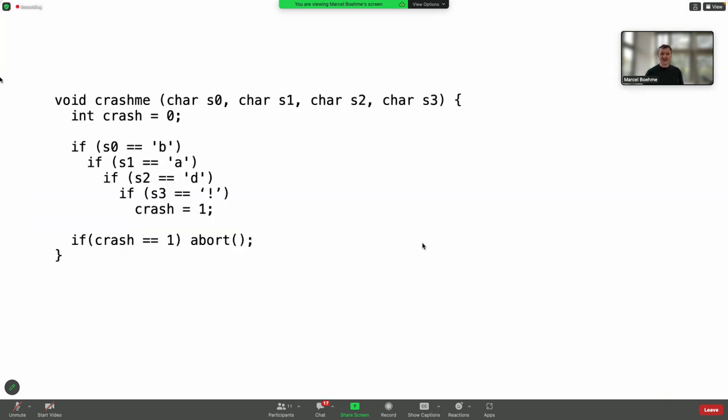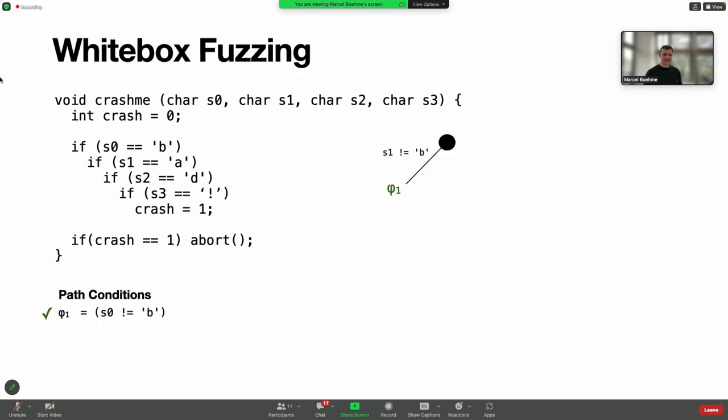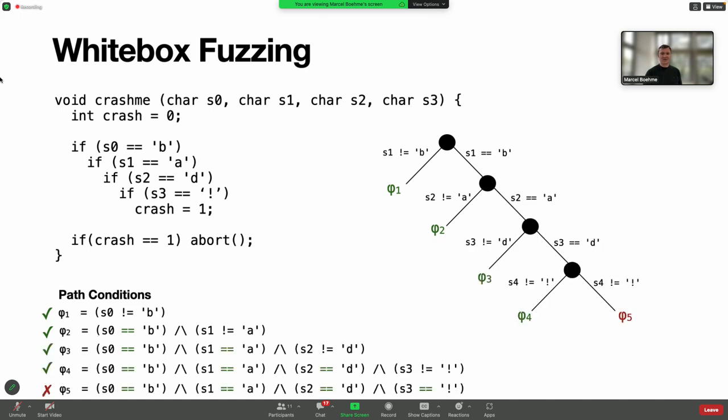So what is fuzzing? Fuzzing is a testing process. Here we are given a program that takes four characters. One approach is white box fuzzing - white box because the analysis can see the internals of that program. The program has four branches and we try to explore every path by capturing the conditions of each branch. One input exercises the path where the first character is not a B. Another input exercises the path where the first input is a B but the second is not an A, and so on.